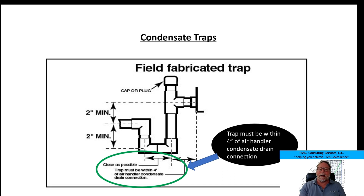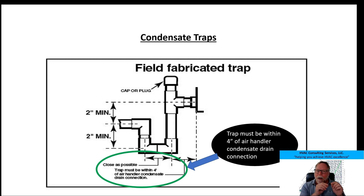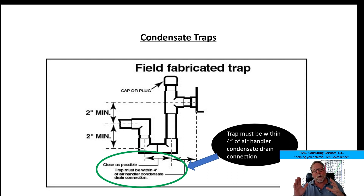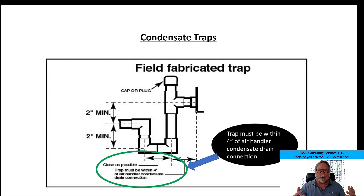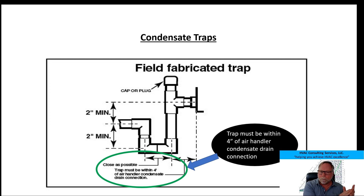Don't forget — the instructions say you've got to have that trap within four inches of the unit. Within four inches. You can pipe it around a little bit for obstructions, but it's got to be no more than four inches from the unit. Get past that four inches and the blower does not have the capability to hold that trap — it's going to back up, overflow, and not drain right. Follow the instructions: within four inches or closer.